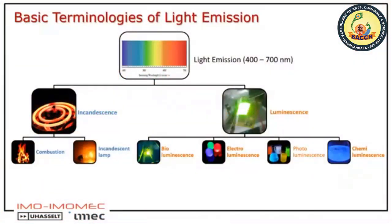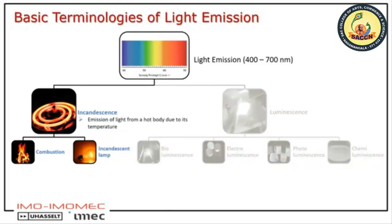Let's start with light emission. If we talk about light emission, I indicate here 400 to 700 nanometers — this is in the visible spectrum — but we can also extend that to lower and higher wavelengths to get UV light emission. If you look at two ways to have light emission, you can talk about incandescence light, which is light emitted from a hot body due to its temperature, such as combustion or the incandescent lamp.